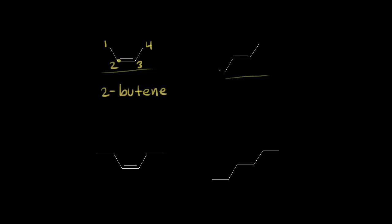What about naming the molecule on the right? We number our carbons: one, two, three, and four. And once again, we have a double bond starting at carbon two. So the name of this molecule would also be 2-butene. However, these are two different molecules.